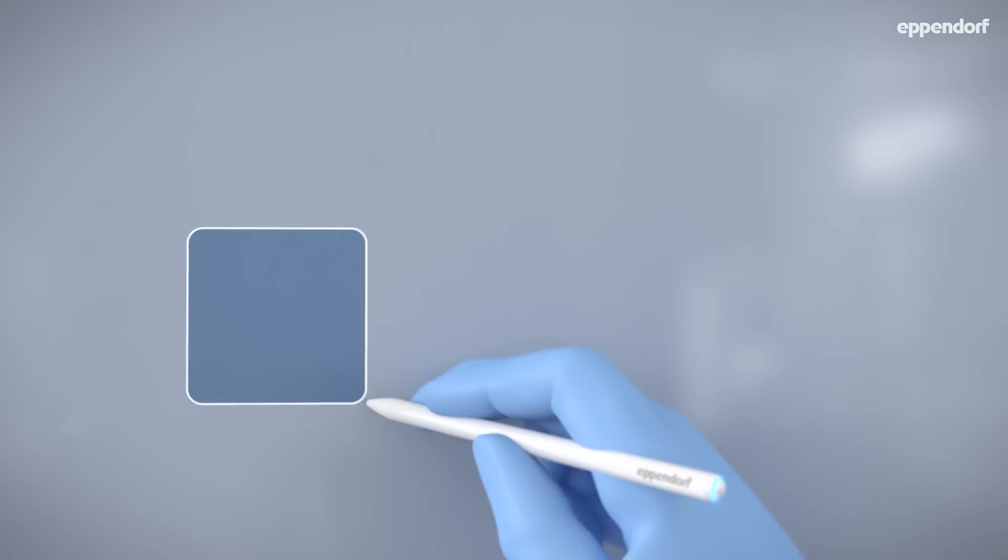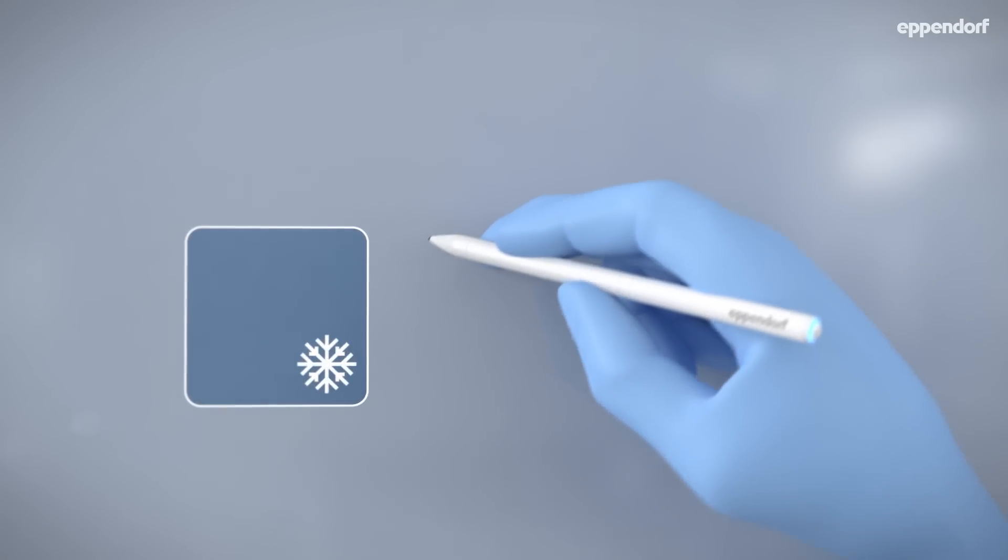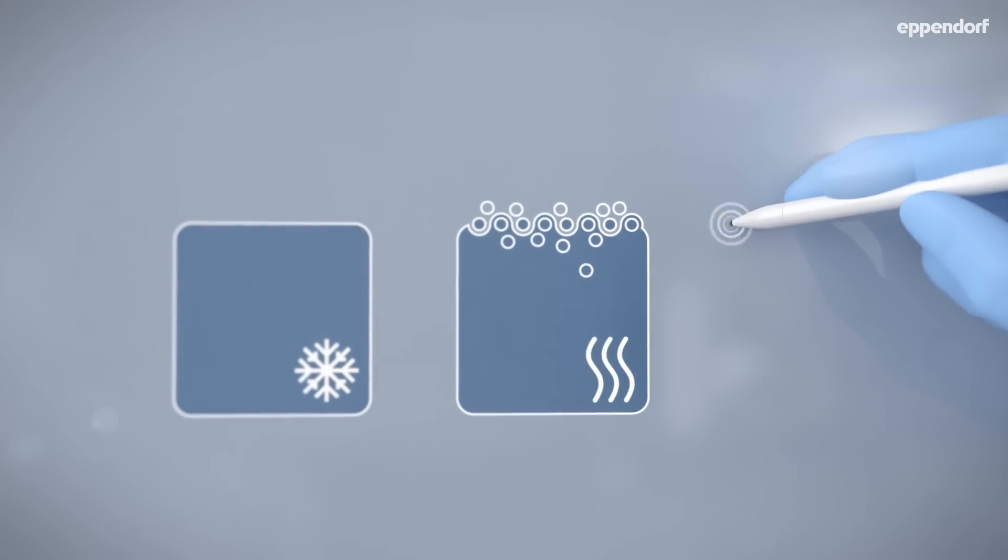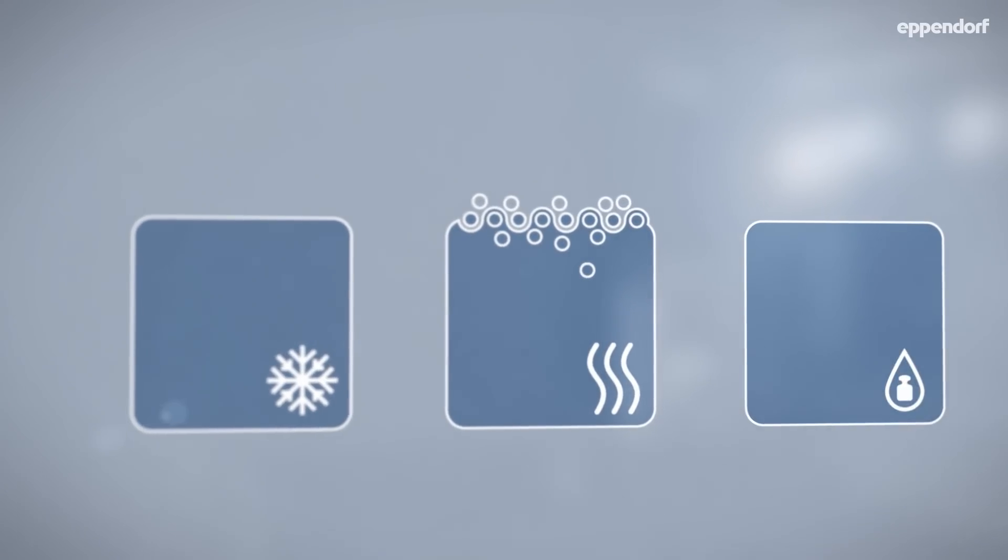With reverse pipetting, you can greatly improve your results when working with problem liquids. Let's look at three categories of problem liquids and see how we can minimize the problems they cause.